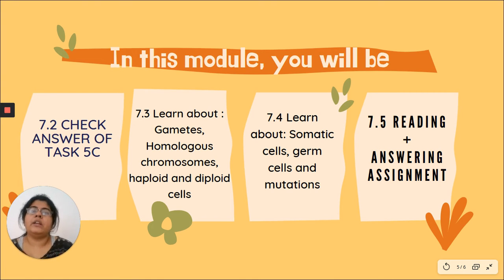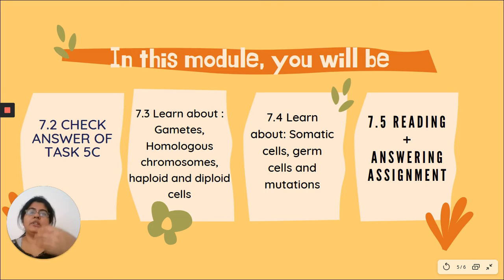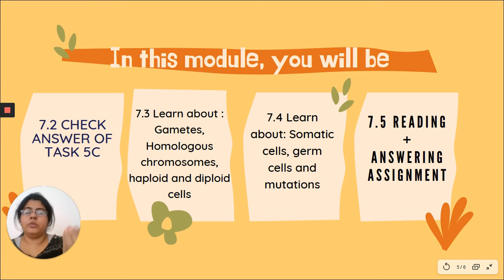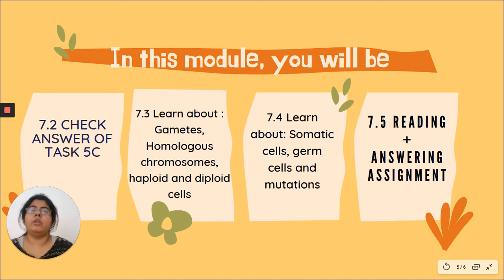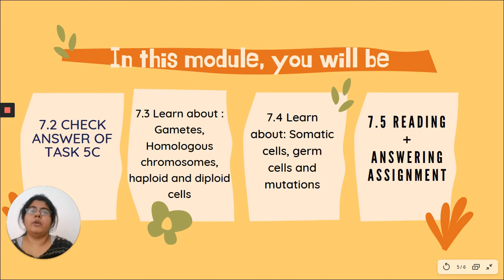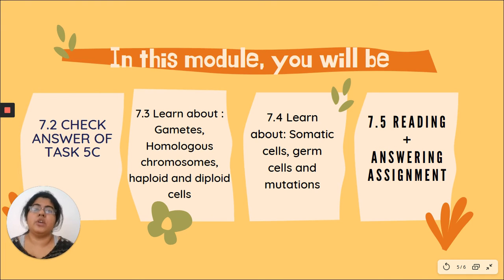You will also get an idea of how you were born — what are the series of events that happened from a zygote until you were completely developed into a full organism. Then you will also learn about what are somatic cells and what are germ cells in Task 7.4.